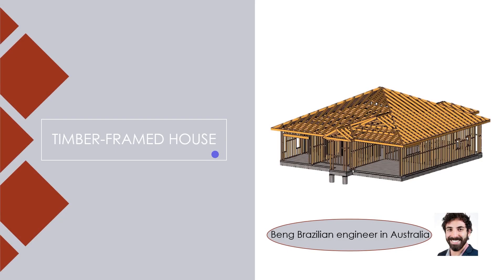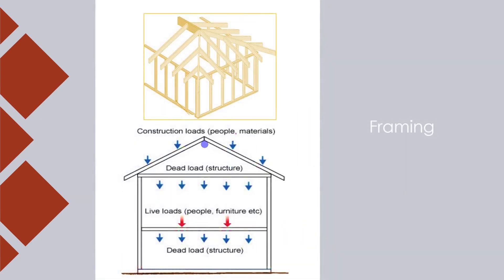The first typical construction method I'll touch upon is timber frame, which is the most common construction system for housing in Australia. The frame is composed of a large number of small elements working in parallel — we've got several rafters working parallel for the roof framing, and below we've got studs working parallel as well. This type of structure transmits gravity loads from the roof down to the footing through the floors and wall frames.